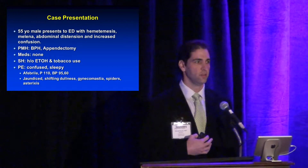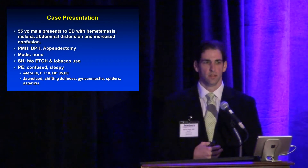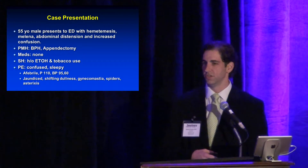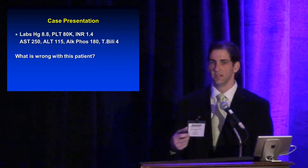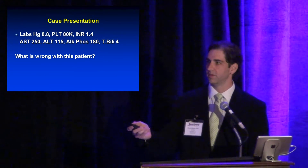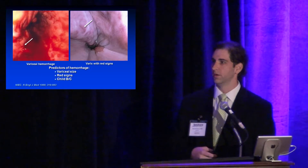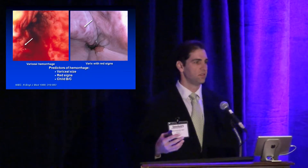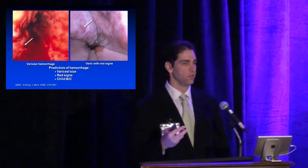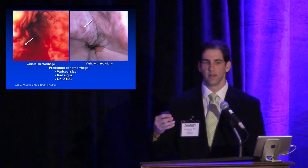A quick case: a middle-aged gentleman presents with GI bleeding, ascites, confusion, and no significant medical history other than heavy alcohol use. He is hypotensive, tachycardic, jaundiced, anemic, has thrombocytopenia, mild coagulopathy, and a bilirubin of four. He is having an upper GI bleed from varices. High-risk varices are those with red spots — stigmata where the variceal wall is significantly thinned and at risk of rupturing. Size, red signs, and severity of liver disease all determine bleeding risk.